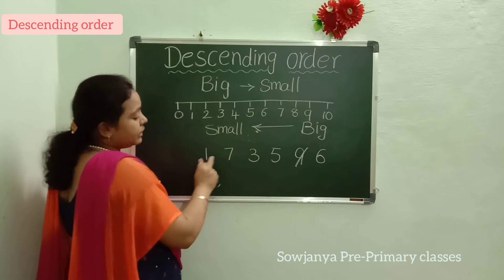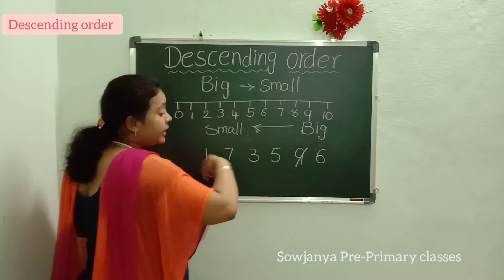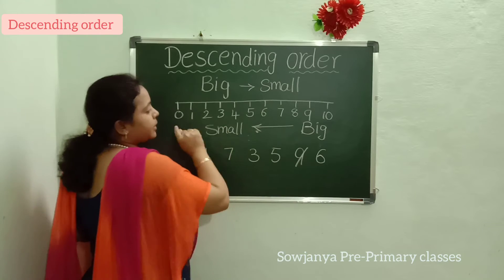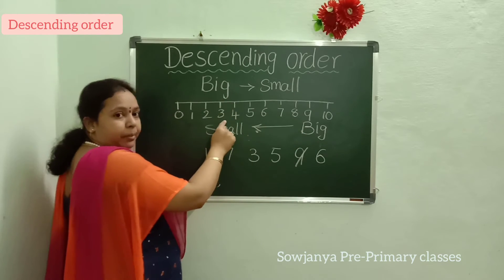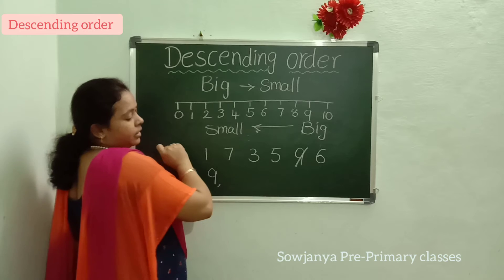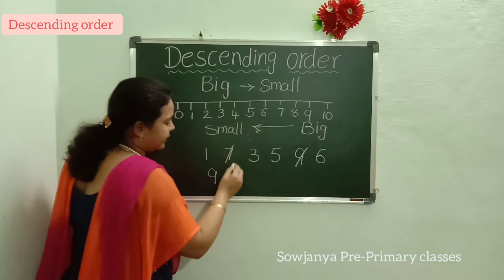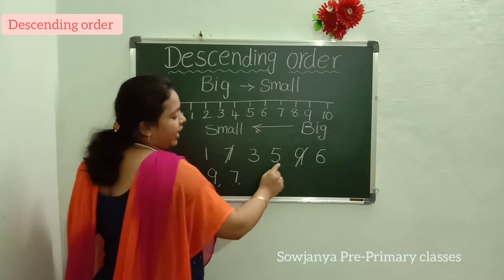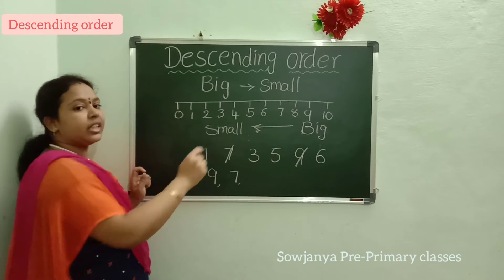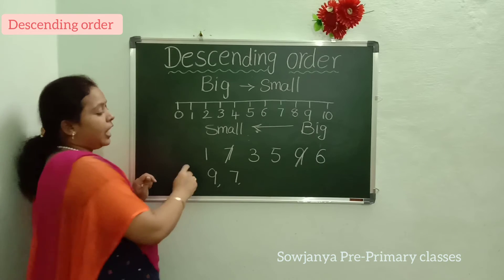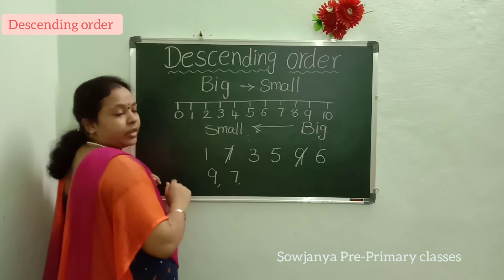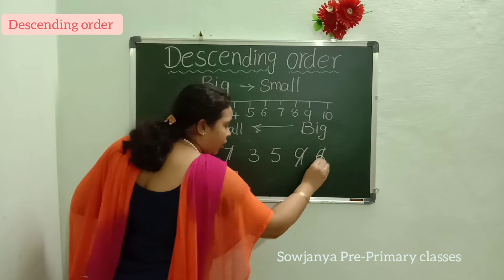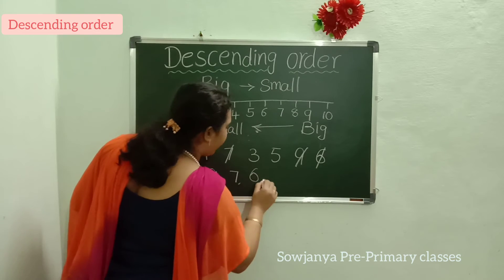Next, from 1, 7, 3, 5, 6 — in these 5 numbers, which is the big number? Observe these 5 numbers on the number line. Yes, 7. Now, cross this 7 and write 7 here. Next, from 1, 3, 5, 6 — in these 4 numbers, which is the big number? Observe these 4 numbers on the number line. Yes, 6. Now, cross the 6 and write here 6.